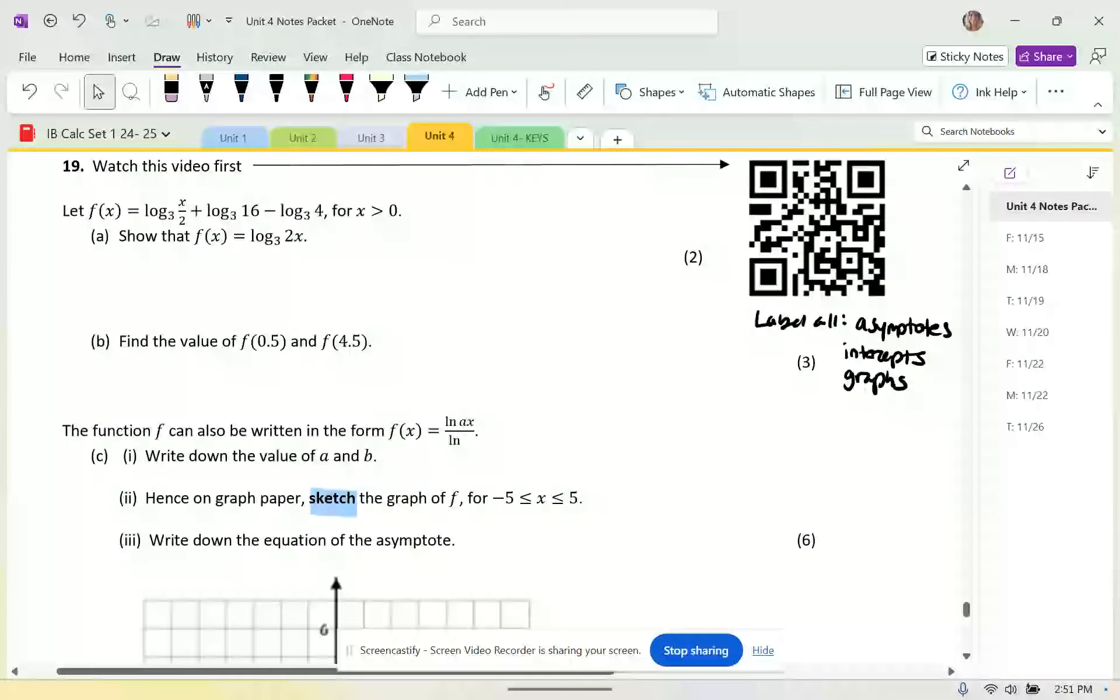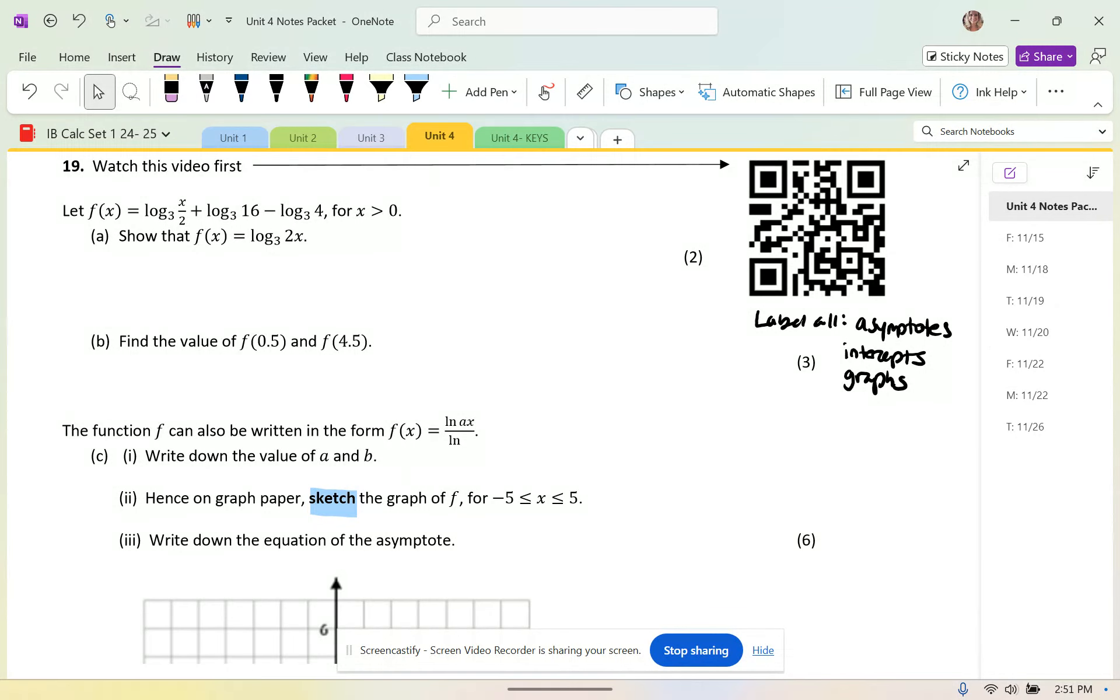So this is let f of x equal log base 3 of x over 2 plus log base 3 of 16 minus log base 3 of 4. I'm trying to consolidate it all into a log base 3 of 2x, so I can do that. I'm going to take the x over 2 and multiply that by 16 first, then I'll combine it with the 4. So I've got log base 3 of 8x over 4, which reduces to log base 3 of 2x.